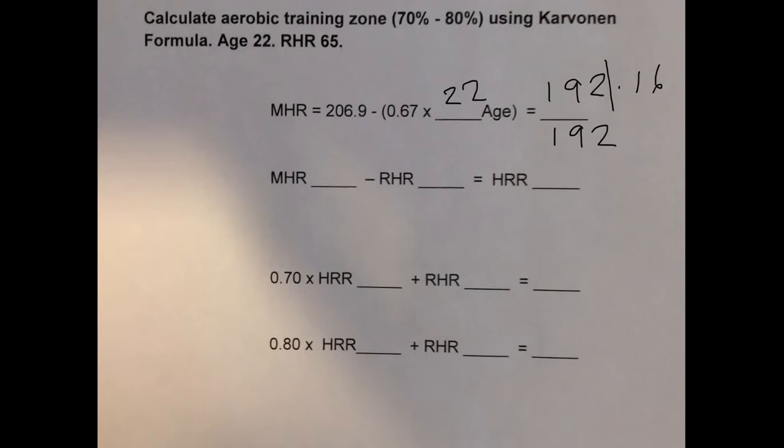Next we calculate the heart rate reserve by subtracting the resting heart rate from the maximum heart rate. So 192 is what we calculated. Subtract from that the resting heart rate of 65 to give the heart rate reserve of 127 beats per minute.